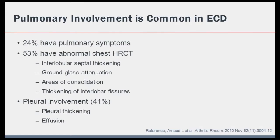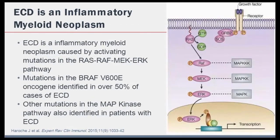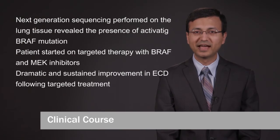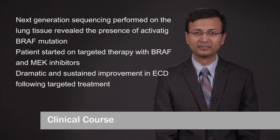Pulmonary involvement can be seen in approximately half of the patients with ECD and can take the form of ground glass attenuation, septal thickening, consolidation, and pleural involvement, a pattern consistent with our case. More recent evidence has demonstrated that activating mutations in BRAF and other MAP kinase proteins in the same pathway are seen in a majority of cases of ECD, thus more accurately characterizing ECD as an inflammatory myeloid neoplasm. We performed next generation sequencing on the lung tissue and identified a BRAF V600E mutation in our case. Targeted therapy with BRAF and MEK inhibitors was started, resulting in dramatic and sustained disease improvement.